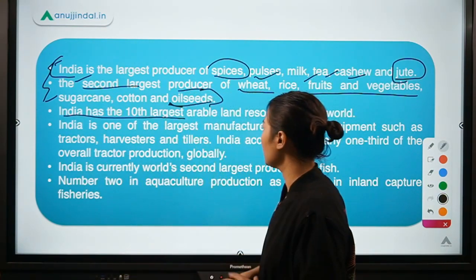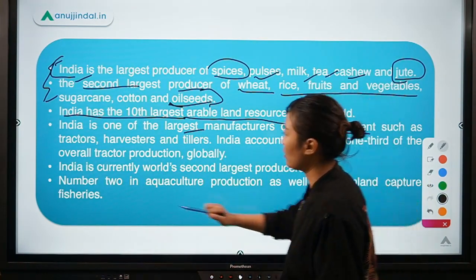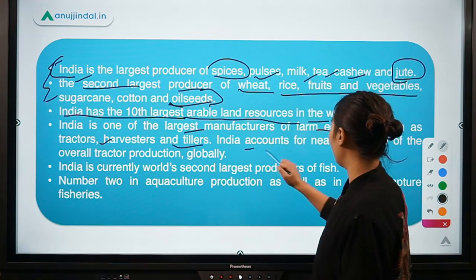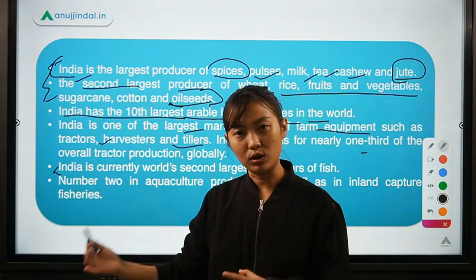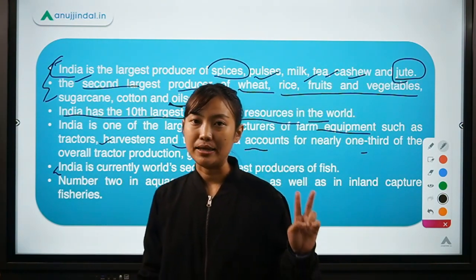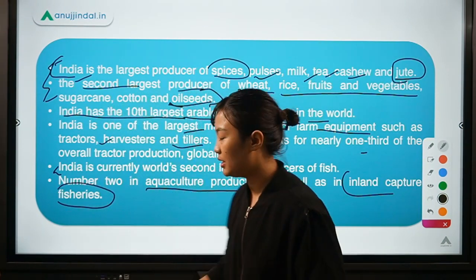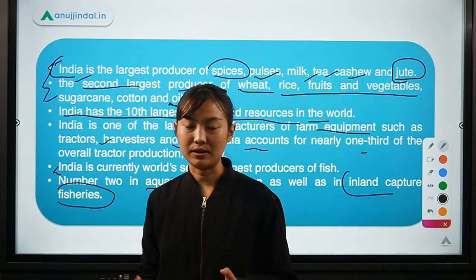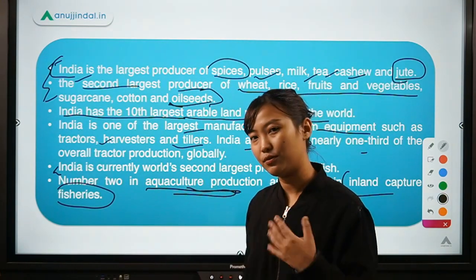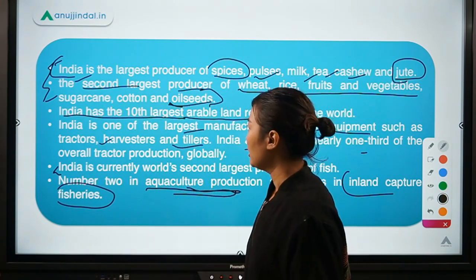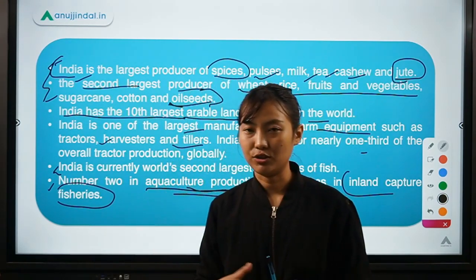India also has the largest arable land resources in the world and is one of the largest manufacturers of farm equipment such as tractors, harvesters, and tillers, accounting for nearly one third of the overall global tractor production. India is currently the world's second largest fish-producing country in aquaculture and also in inland capture fisheries — terms which relate to the production, rearing, and breeding of fish.